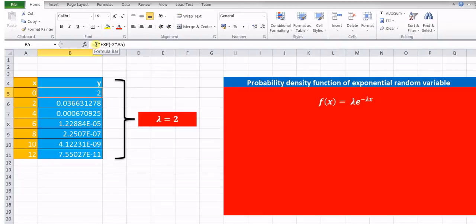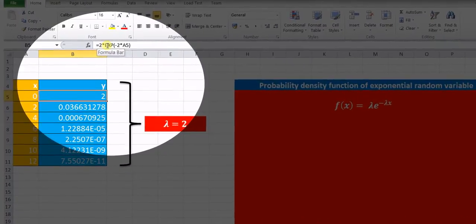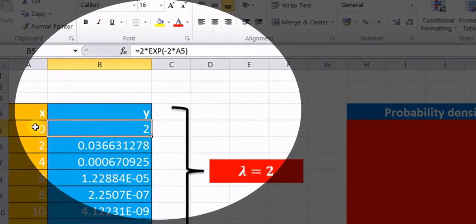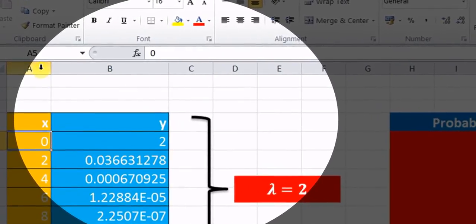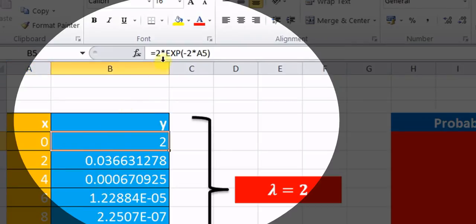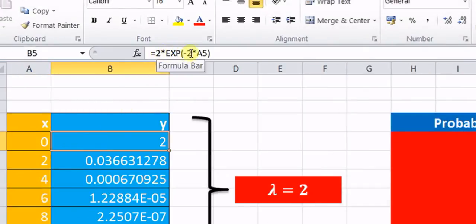So, lambda is 2 over here multiplied by exponential that is e raised to minus 2 multiplied by a5. Where a5 is nothing but what? This a5 says the value of x is 0 over here. So, 2 into e raised to minus 2 into 0. So, that value is 2.